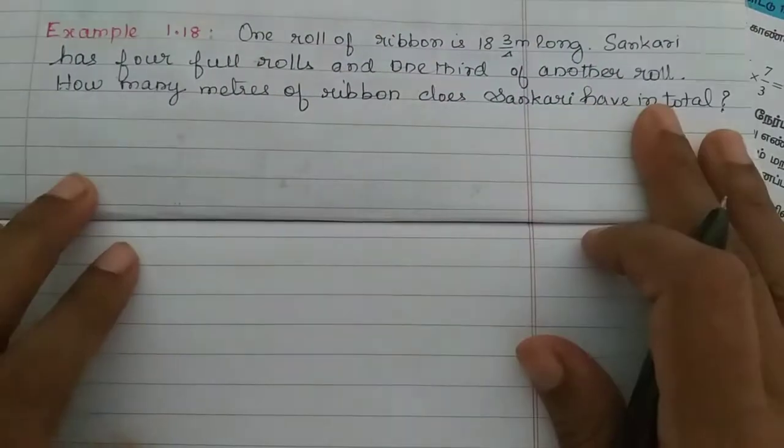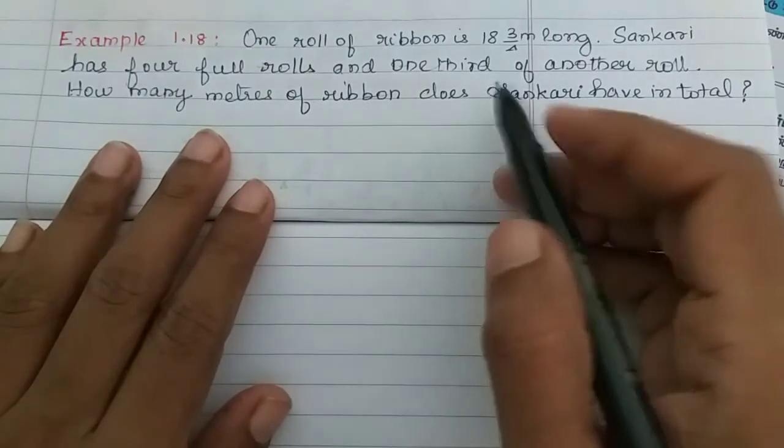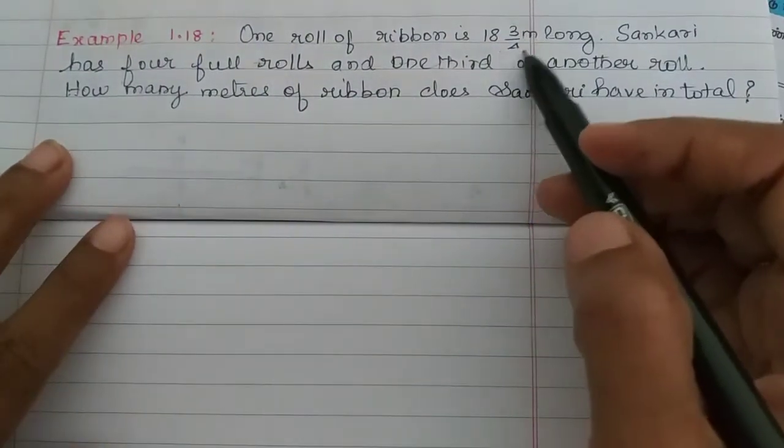Students, in the video, we will look at example 1.18. One roll of ribbon is 18 3 by 4 meter long.